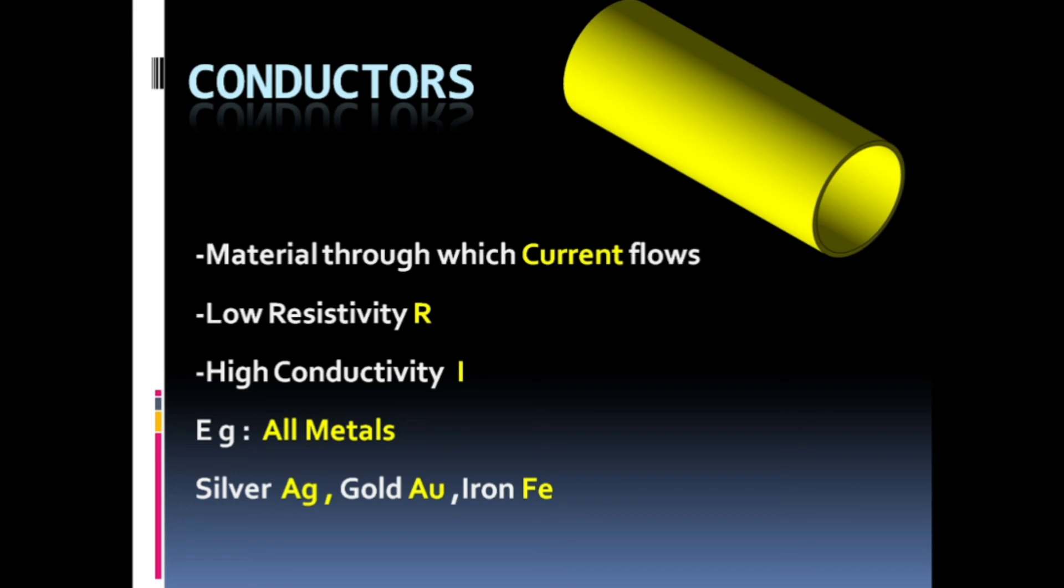What is a conductor? A conductor is any material that is able to pass current through it. Examples include copper, iron rod, silver rod, and gold rod. These are examples of conductors.